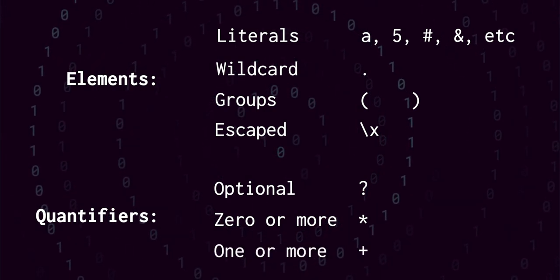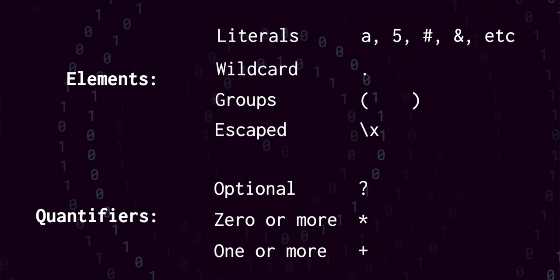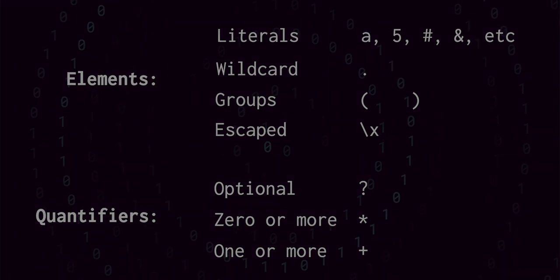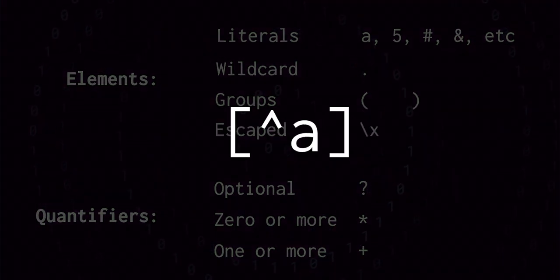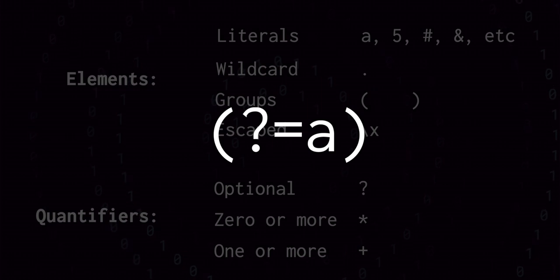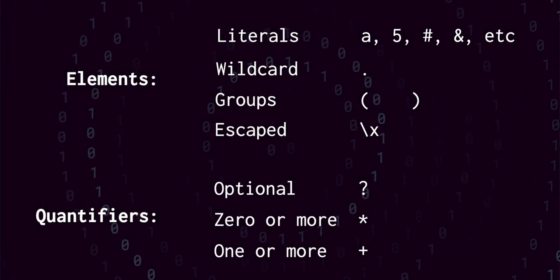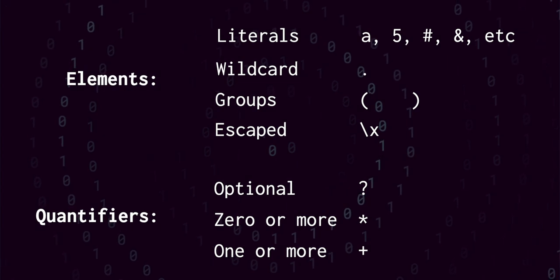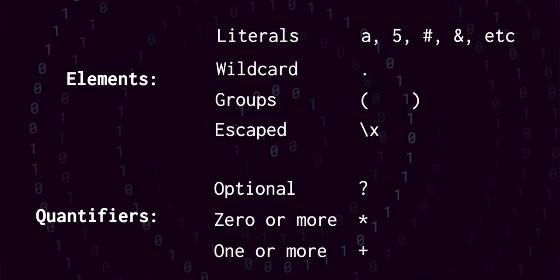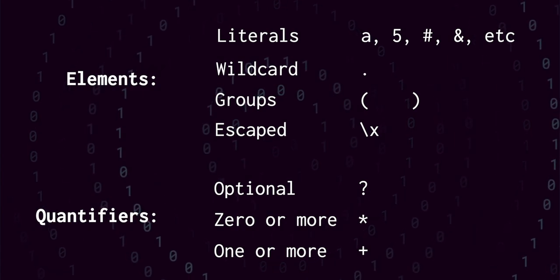The star character tells the regular expression engine to match zero or more of the element. And the plus character, which is just like the star, but instead tells the regular expression engine to match one or more of the element. You'll notice that familiar constructs like ranges, negations, alternations, look-aheads, etc. are missing. But understanding how our basic features work will make implementing these other constructs fairly straightforward, and they will be left as a very real and interesting challenge for the viewer.